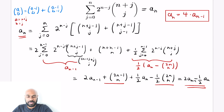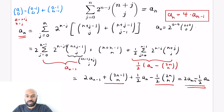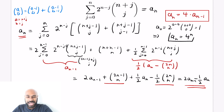We've really simplified what's going on. The base case is when n equals 0: we get 2 to the 0 times 0 choose 0, which is 1. Iterating the recursion a sub n equals 4 times a sub n minus 1, we get a sub n equals 4 to the n. What a surprisingly compact expression for this entire huge sum!